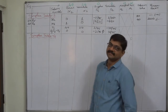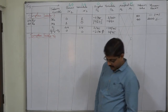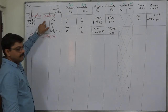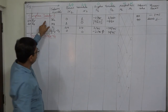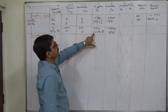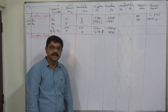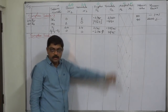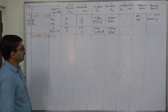Hello friends, welcome again. Now this is the turn of simplex table 4. We had already prepared simplex table 3 in the previous lecture and found that the solution is not optimal because one of the delta values is still negative. In a minimization case, all delta values should be 0 or positive to have the optimal solution. So we need to prepare simplex table 4.